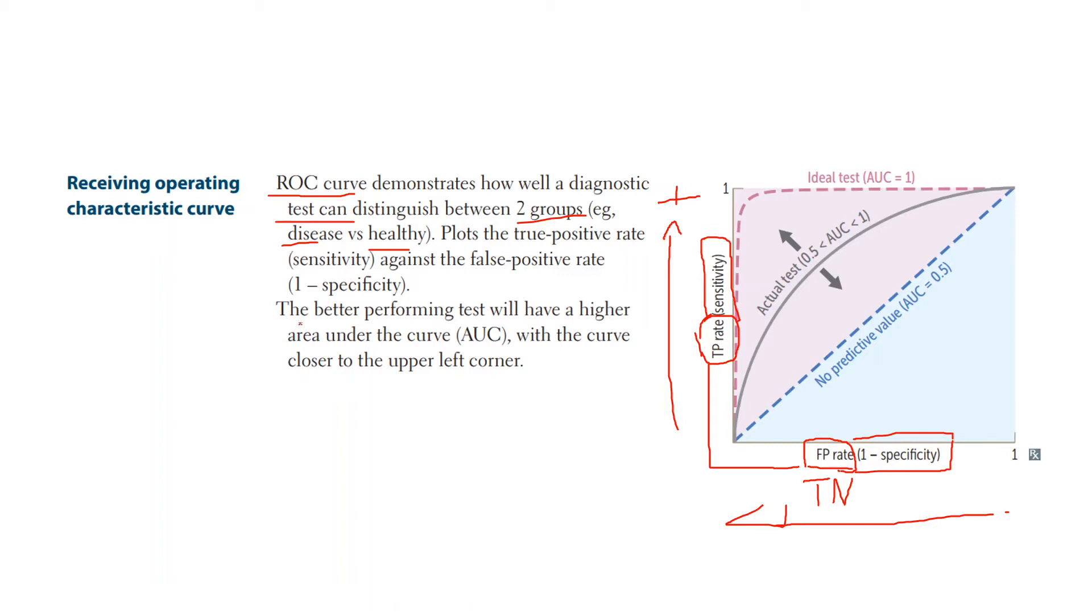They mention here that the better performing test will have a higher area under curve and they call this as AUC. When they say area under curve, this is what they're talking about. For example, this is the area under this curve that's dissecting the graph in half.